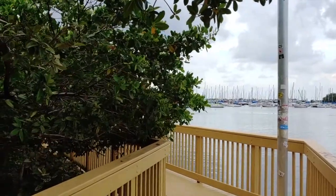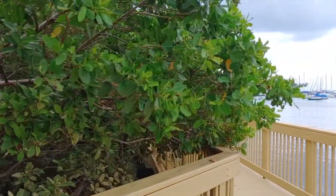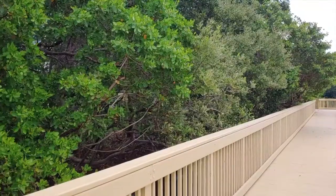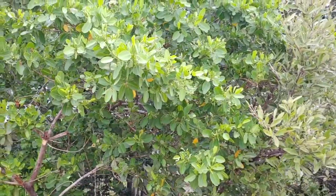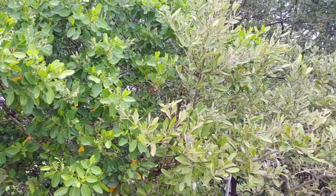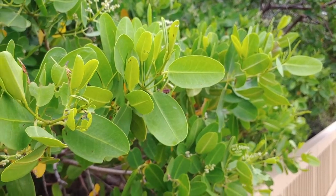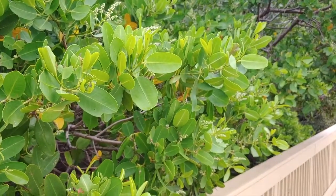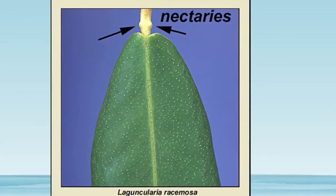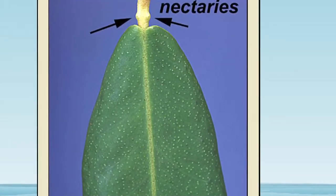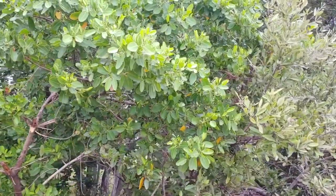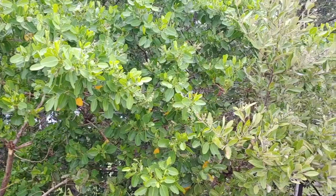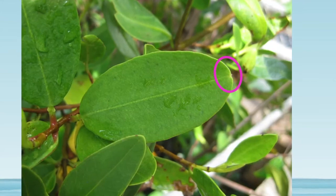The last of our true mangroves is the white mangrove, or Laguncularia racemosa. Even though these are really salt-tolerant, white mangroves typically grow at the highest and driest part of the tidal zone. They may have peg or prop roots depending on habitat conditions, but most have neither. They are best differentiated by their paddle-shaped, succulent, light green leaves that are rounded at the tip and smooth underneath. At the base of each leaf are glands called nectaries, which excrete sugar and salt. A key identifying feature is a little notch at the top of each leaf — a dead giveaway for the white mangrove.